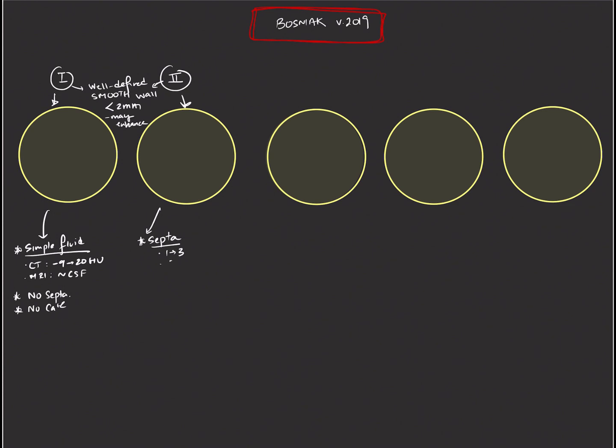In terms of septations, Bosniak 2 cysts are allowed to have anywhere from 1 to 3 thin septations. When we say thin septations, we're talking about septations that are less than 2 millimeters in width. Here you can see two septations within this otherwise simple cyst. We don't worry about those, and we classify these lesions as Bosniak 2. These septations within these cysts may enhance. We're not too worried about those, as long as they're thin and there are few of them.